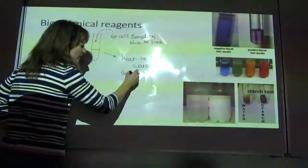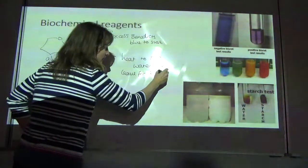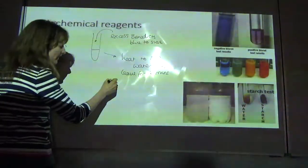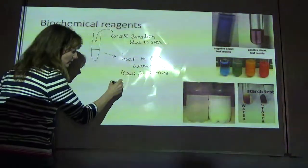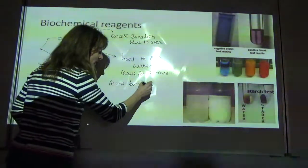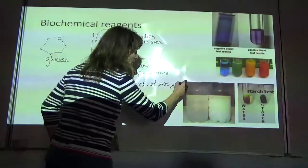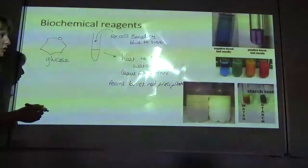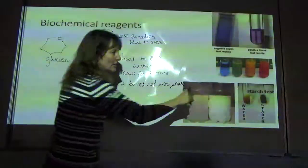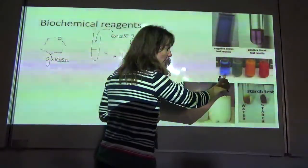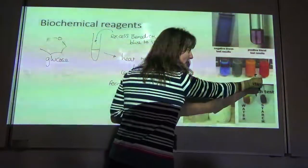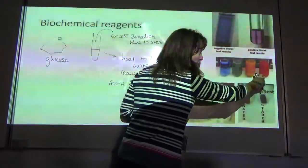Then we heat it up at 80 degrees centigrade in a thermostatically controlled water bath. Leave it for a few minutes. And then if it forms a brick red precipitate, then you know that glucose was present or reducing sugar was present. And you can see on this scale here that we've got blue, which is the original color of the Benedict's.